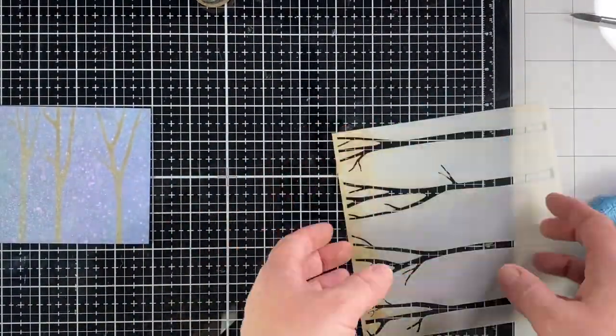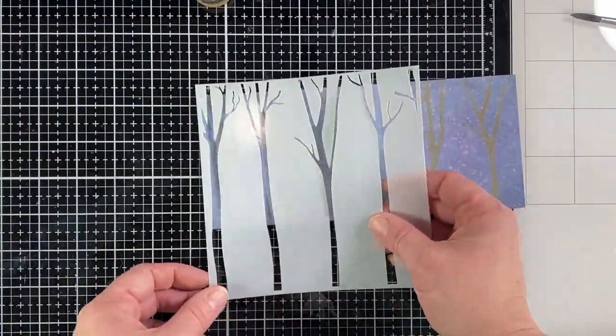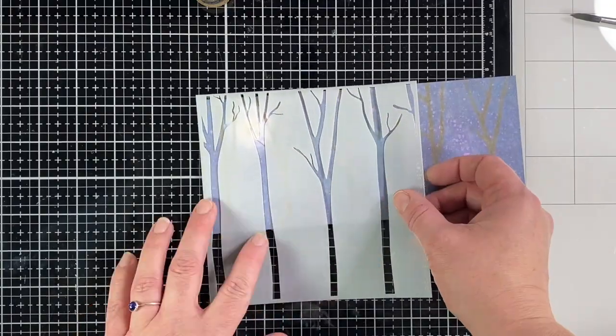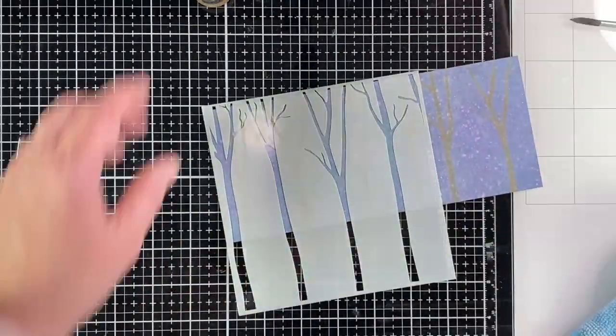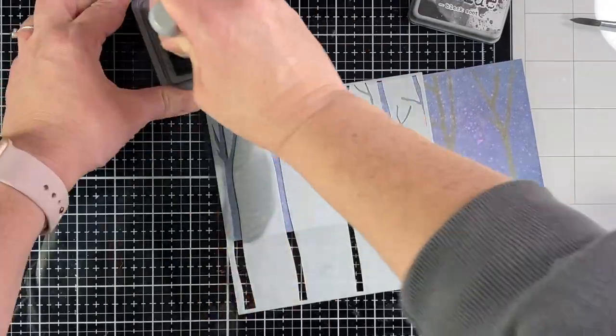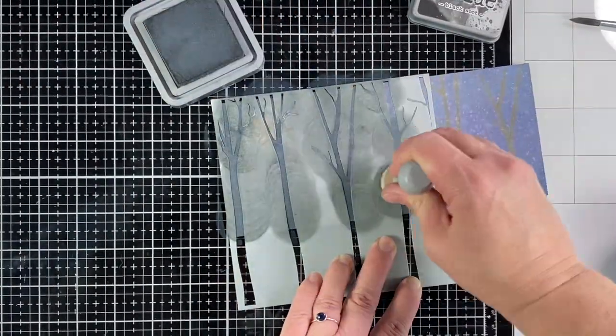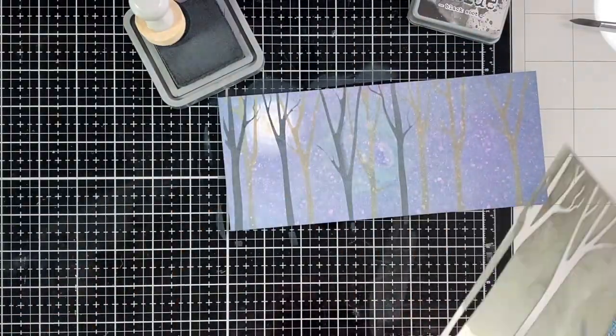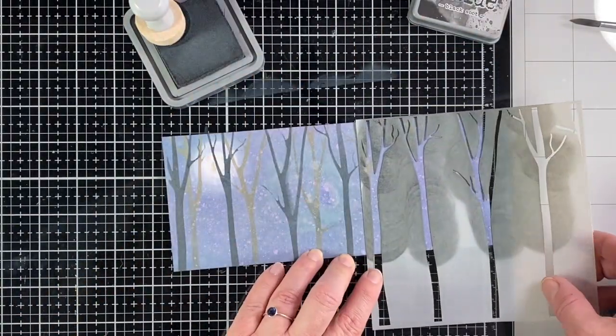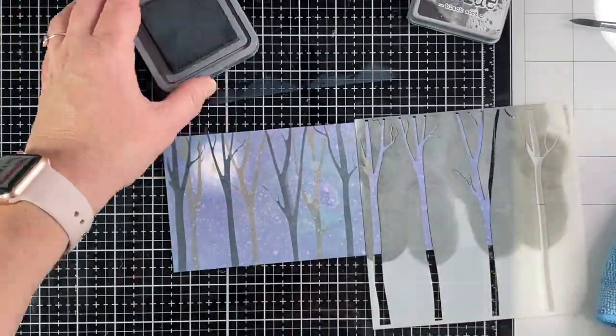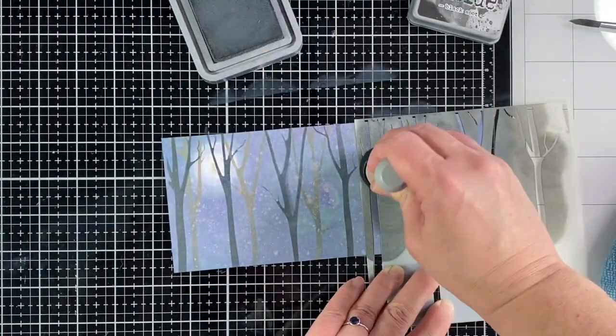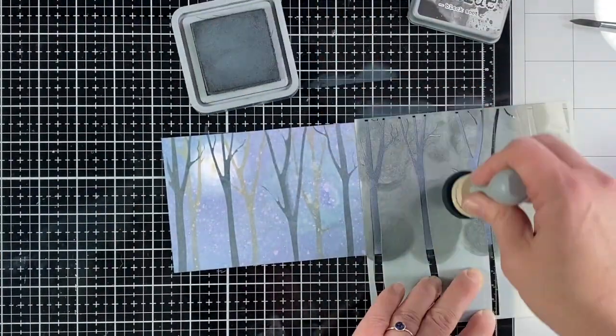For each layer I used distress oxide ink. The first one was frayed burlap and then this one is black soot. Again I used the pixie spray, make sure that was adhered and I just went ahead and tapped and went in circles making sure that I got a good coverage. Do you see how already with just the two layers how the forest is already coming together? These stencils are really cool, really amazing.